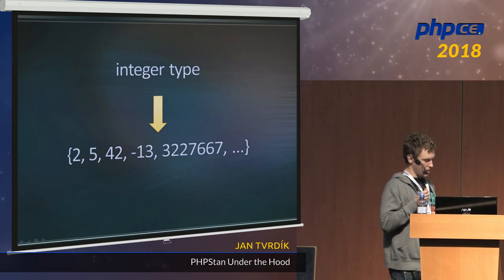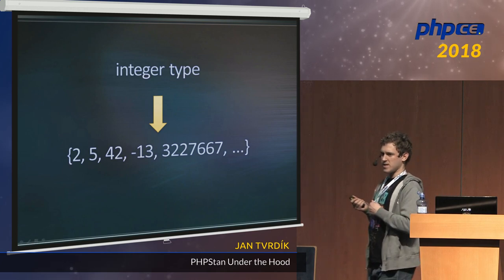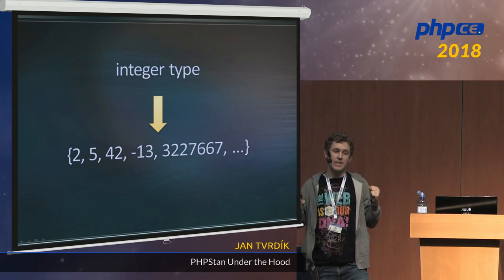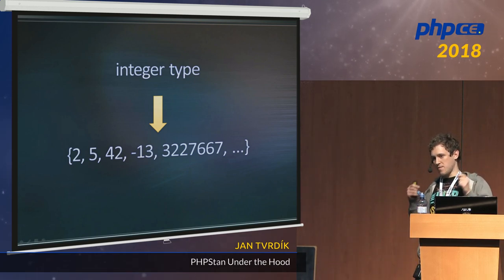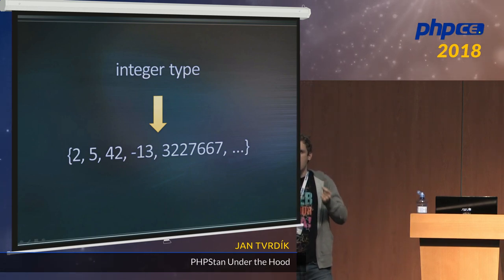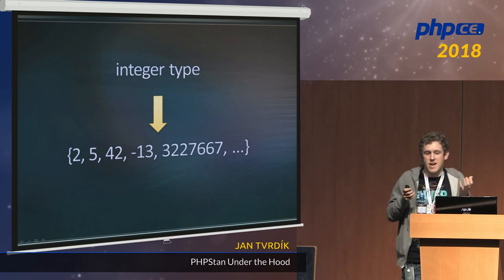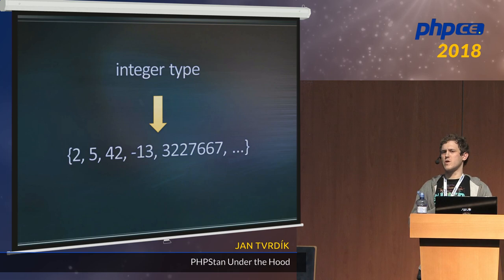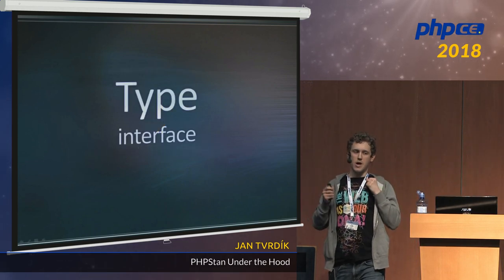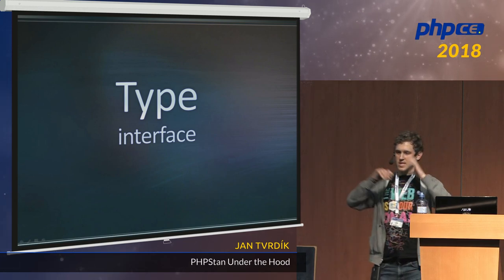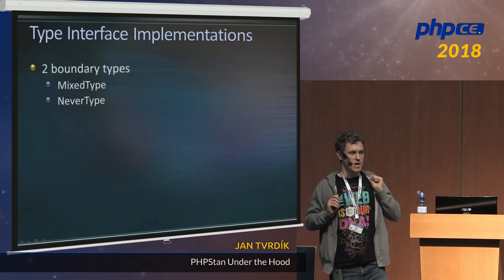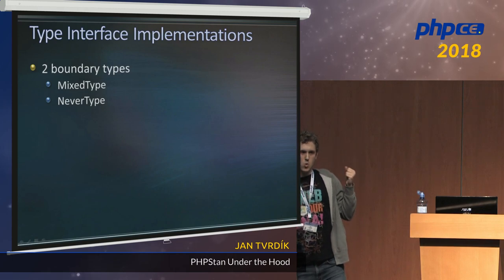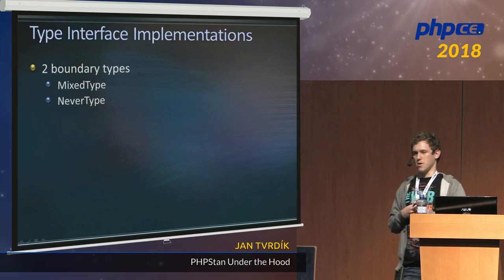Let's think about real types. For example, the integer type represents a set of possible values containing all integers — that's a lot of values. The array type represents an even more massive set. Computing on each individual member wouldn't be feasible. So PHPStan needs an abstraction to reason over these massive sets. This abstraction is called the type interface — the foundation by which PHPStan models sets of values. PHPStan has many implementations of this interface: basically for any set it would be handy to accurately represent, there is an implementation.